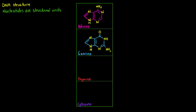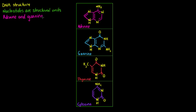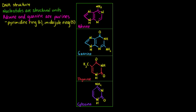So here we have adenine, guanine, thymine, and cytosine. Straight away we notice that adenine and guanine look almost identical, and thymine and cytosine look almost identical as well. We refer to adenine and guanine as purine bases, because they contain two rings: a pyrimidine ring which is six-sided, and an imidazole ring which is five-sided. The N's in the structure stand for nitrogen, which is why they're called nitrogenous bases.